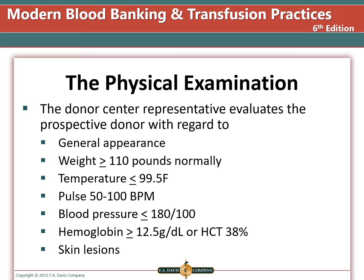When performing a physical examination of a potential blood donor, the general appearance should not be overly anxious, drunk, or high. There should not be skin lesions near the site of phlebotomy. The weight should be greater than or equal to 110 pounds. The temperature should be less than or equal to 99.5 degrees Fahrenheit. The pulse should be between 50 and 100 beats per minute. The blood pressure should be less than or equal to 180 over 100; if either is over, the person is deferred. The hemoglobin should be greater than or equal to 12.5 grams per deciliter, or the hematocrit should be 38% or more.